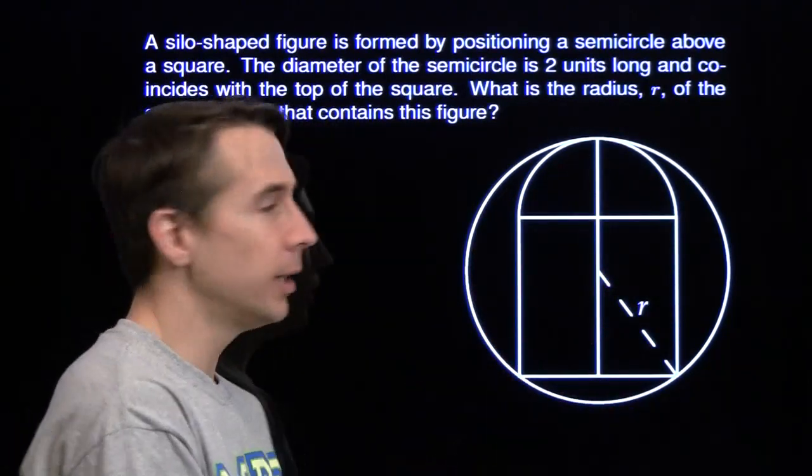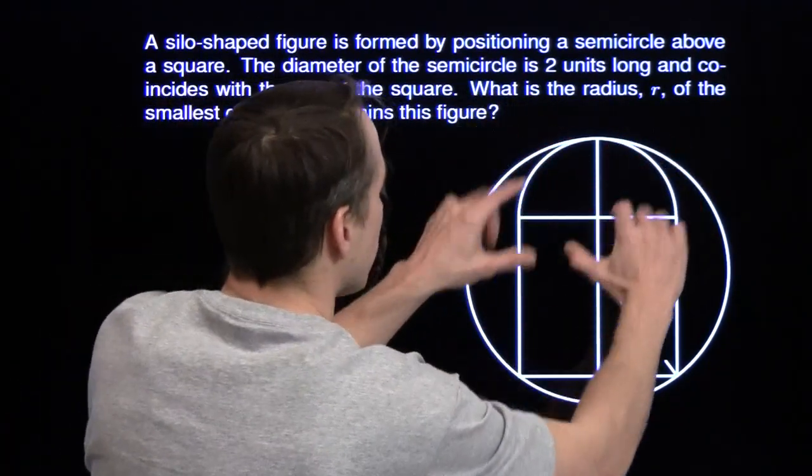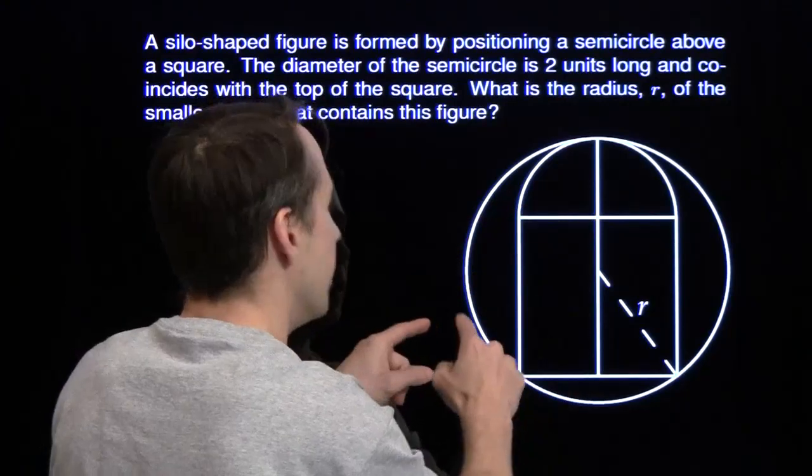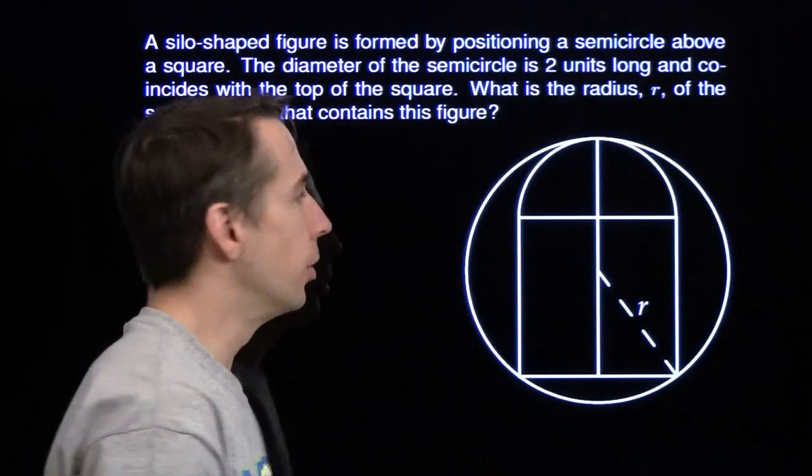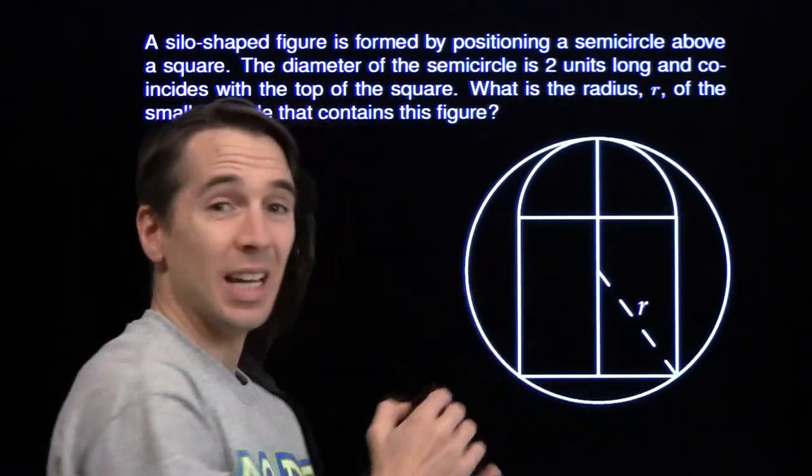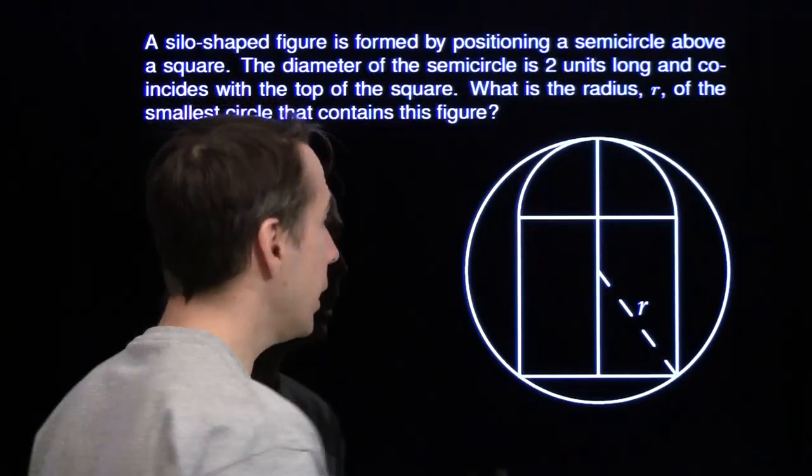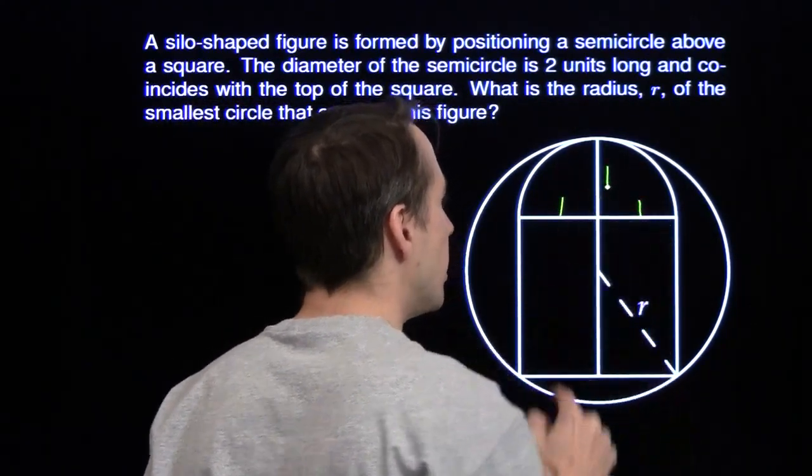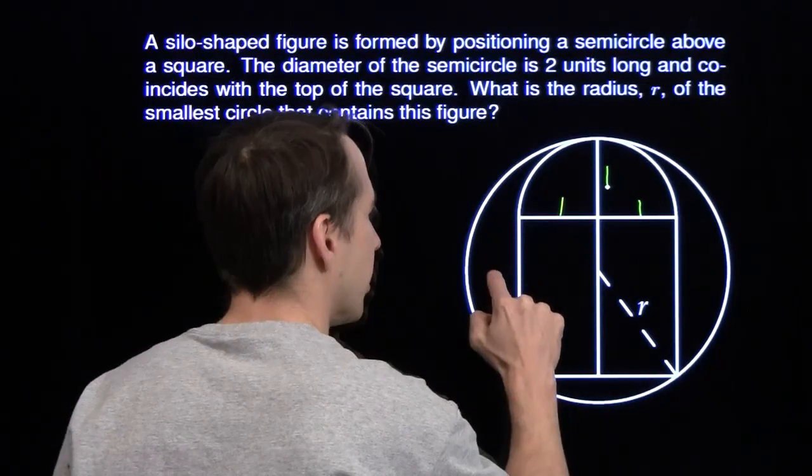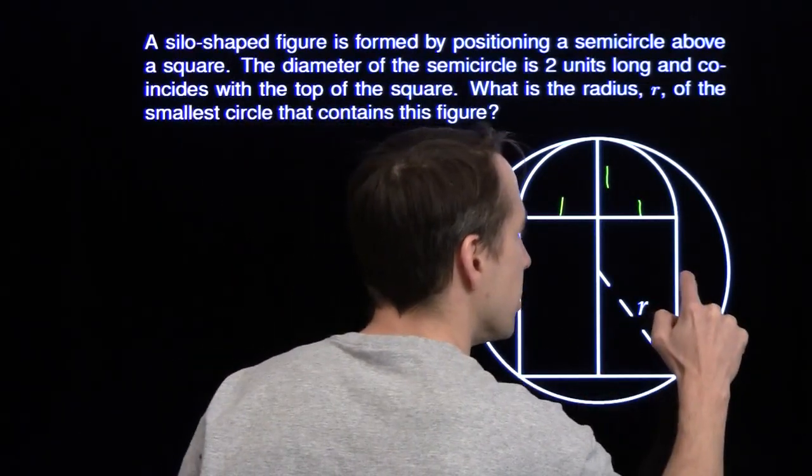So we've got this silo-shaped figure right here. And we have a semicircle sitting on top of a square, and it's all embedded inside this big circle. And we're told that this semicircle has a diameter of 2. That means we can start labeling some things. We know this is 1, this is 1, this is 1. Square has side length 2. This is 2. This is 2.